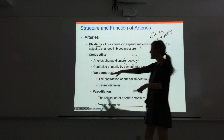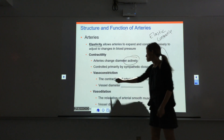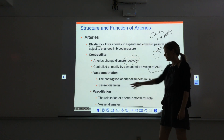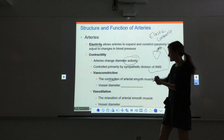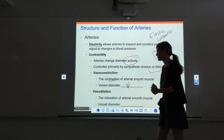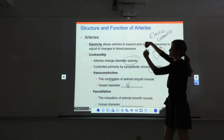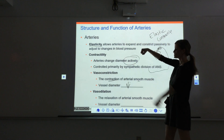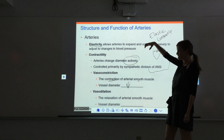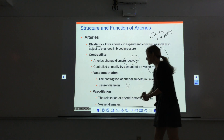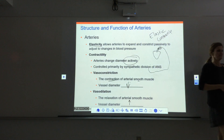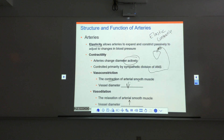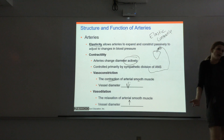Vasoconstriction occurs when we contract the smooth muscle, and the vessel diameter decreases or gets smaller. Vasodilation is the opposite — when the smooth muscle relaxes, the vessel dilates and the diameter increases. Veins also have the ability to contract and relax, but it's not as pronounced because they don't have as much muscle.